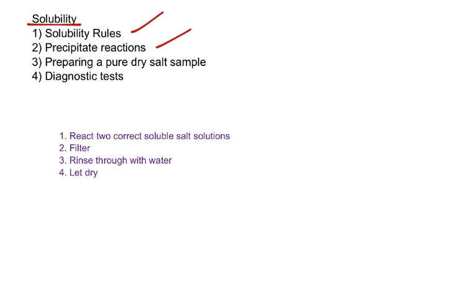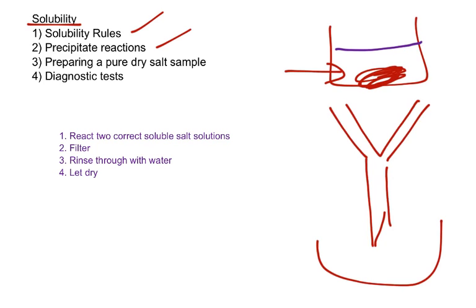You just mix. So you react two correct soluble salt solutions. They have to be correct, because they have to obviously produce an insoluble salt. So let's say silver nitrate reacting with sodium sulfate. Once the two are mixed, we end up with a clear solution with an insoluble salt, or precipitate, over here. We then funnel and filter. So we end up with the liquid part coming through here, and what's left behind in the filter paper is the insoluble salt.